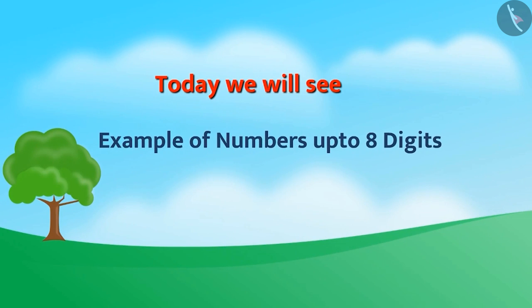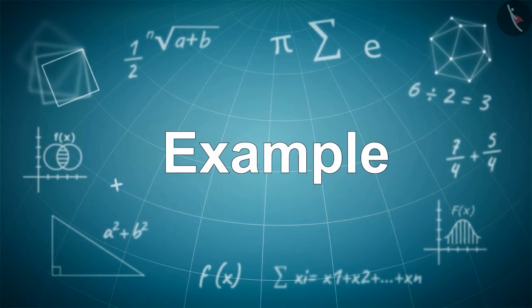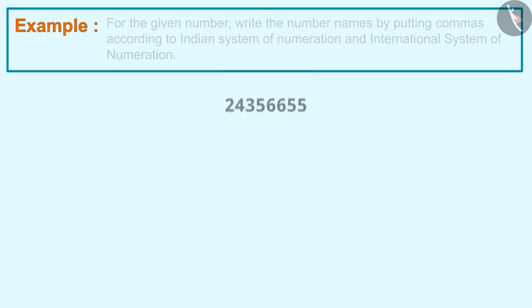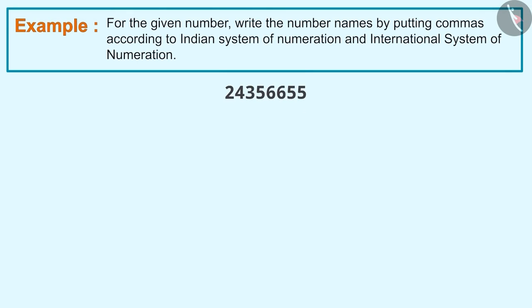Today we'll see examples of numbers up to eight digits. For the given number, write the number names by putting commas according to the Indian System of Numeration and International System of Numeration.